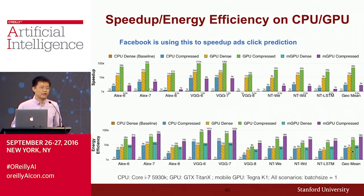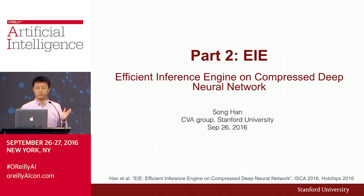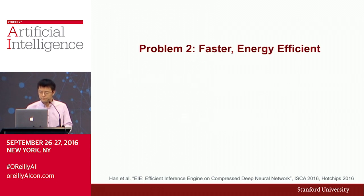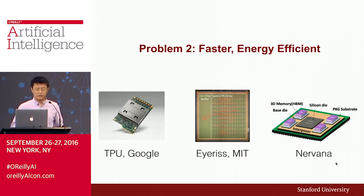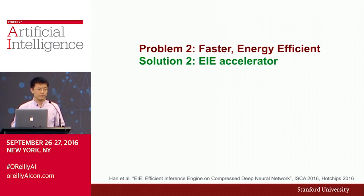That motivates the second part of my presentation: EIE, the Efficient Inference Engine, which works directly on the compressed neural network. The problem we are solving is speed and energy. Google has proposed the TPU, MIT proposed IRIS, and Nervana also built a custom ASIC for inference and training. What I propose is a similar domain — an ASIC accelerator called EIE, Efficient Inference Engine — the first accelerator that works directly on deeply compressed models.